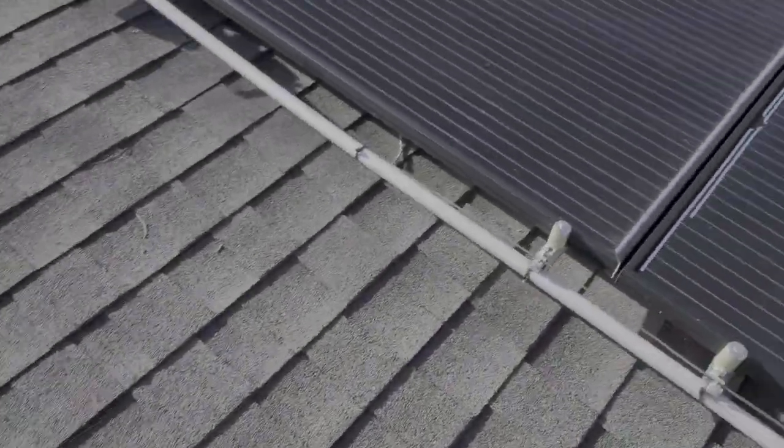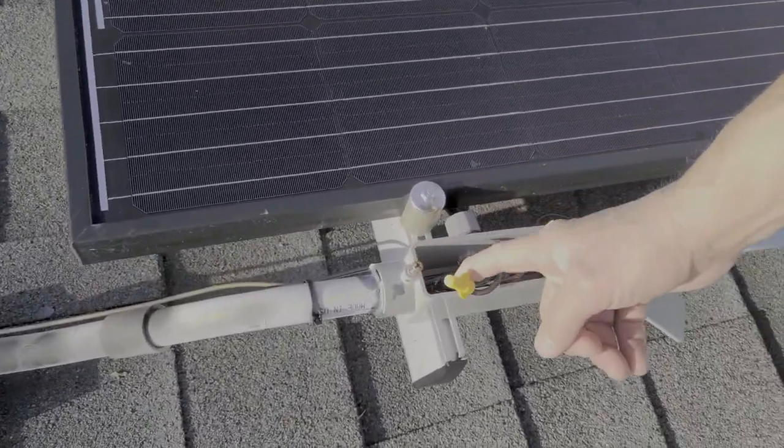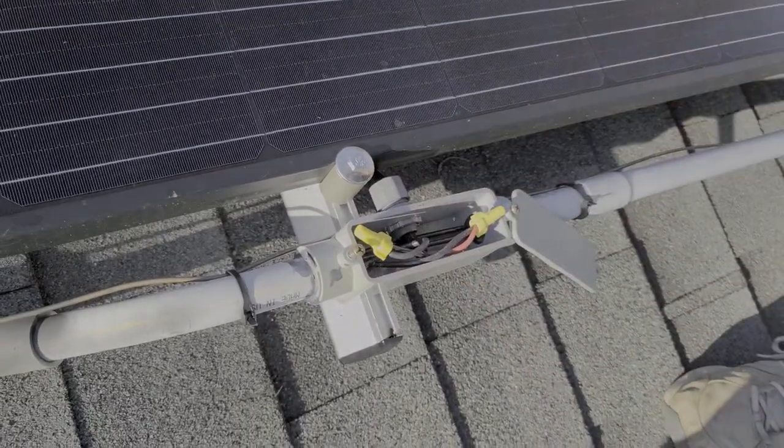So now if we come up for the second string we've got the same thing. Positive and a positive coming out and we can see that the other string, the 12 gauge from there, is just running right through it.